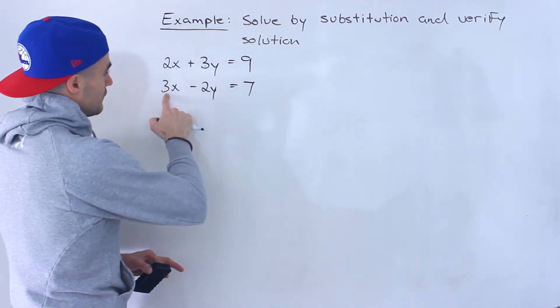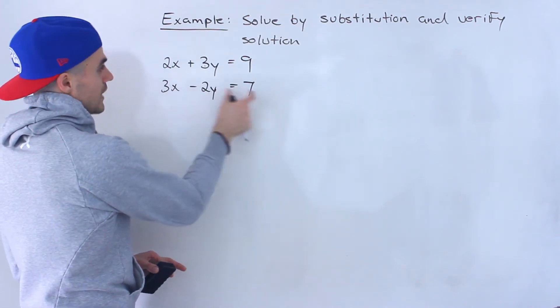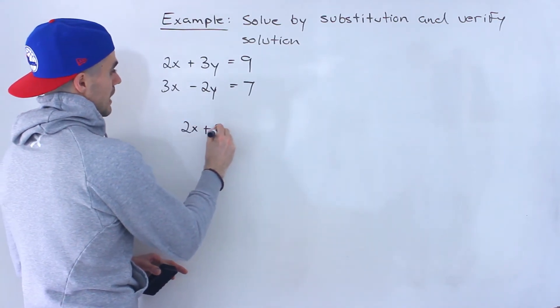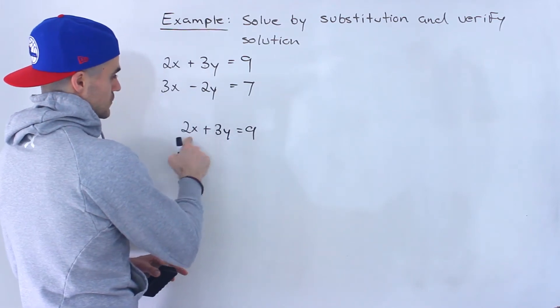And then over here if I divide by 3, fraction, fraction. If I divide by 2, this would be a fraction, this would be a fraction. So what I'm going to do is I'm going to take this line, that first line, and I'm going to isolate for this y.